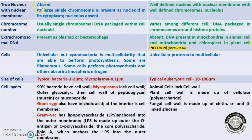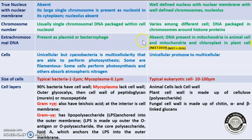This slide shows differences between prokaryotic and eukaryotic cells. In prokaryotes, a true nucleus with nuclear membrane is absent; instead, the nucleus is present as a single chromosome in the form of a nucleoid. Eukaryotic cells have a well-defined nucleus with nuclear membrane. Chromosome number is usually single in prokaryotes while it varies between different individual species. Extrachromosomal DNA in prokaryotes is present as plasmid or bacteriophage, and is normally absent in eukaryotes.